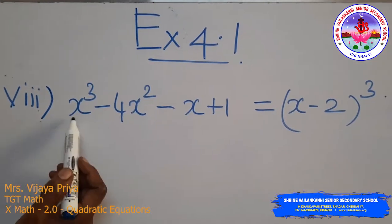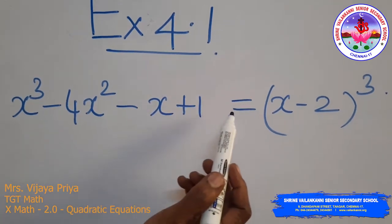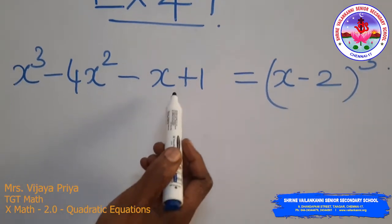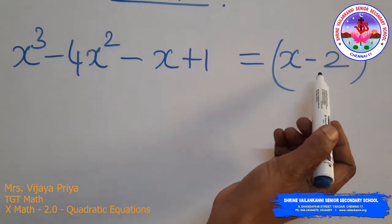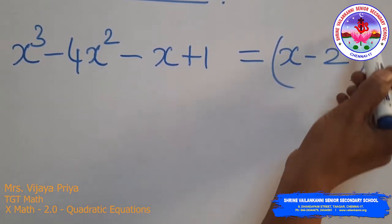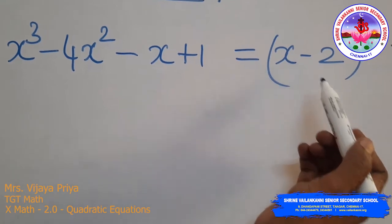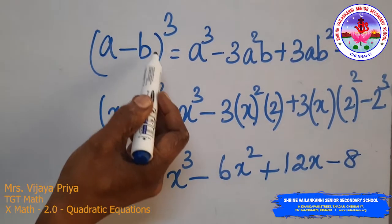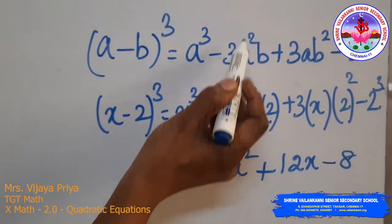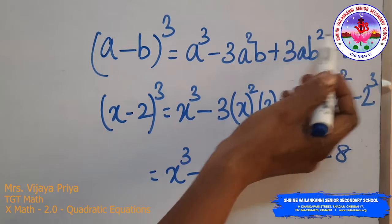Eighth subdivision: x³ − 4x² − x + 1 = (x − 2)³. The left hand side is in expanded form, so we expand the right hand side using the identity (a − b)³ = a³ − 3a²b + 3ab² − b³.